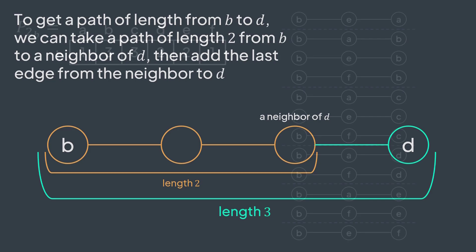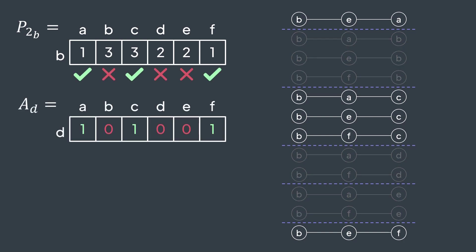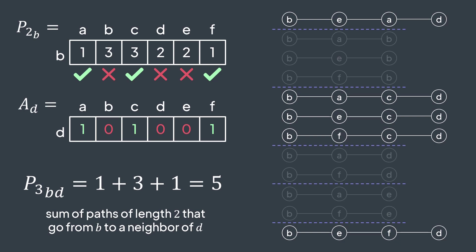From P2, we know that we have one path of length 2 from b to a, three paths from b to b, three paths from b to c, two paths from b to d, two paths from b to e, and one path from b to f. Neighbors of d are a, c and f, so we can extend paths that go to them by adding d, and we get paths of length 3 that go from b to d. A total of five paths, same result as with the previous method.